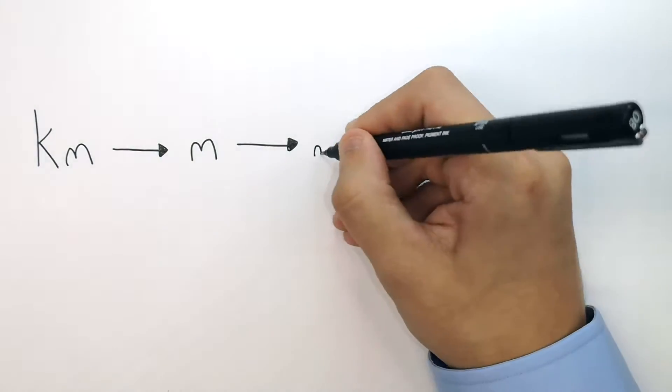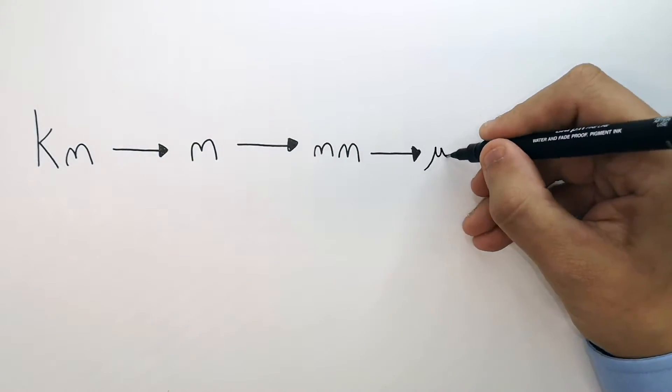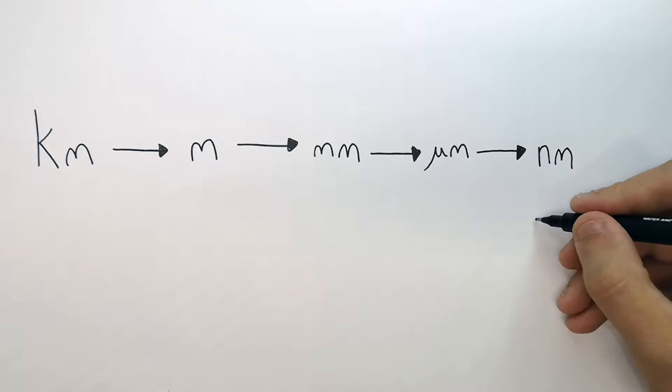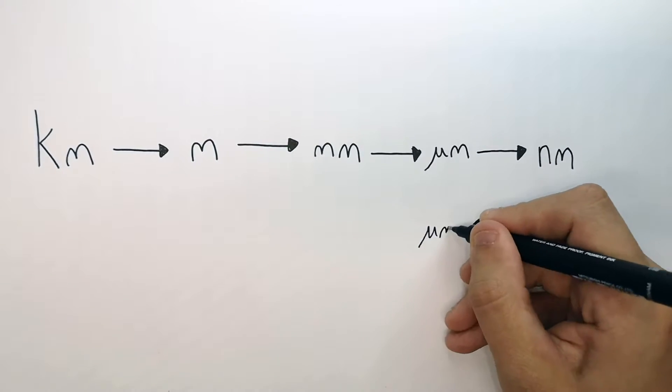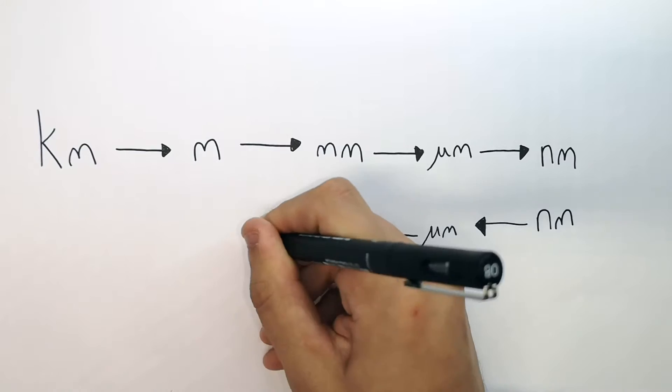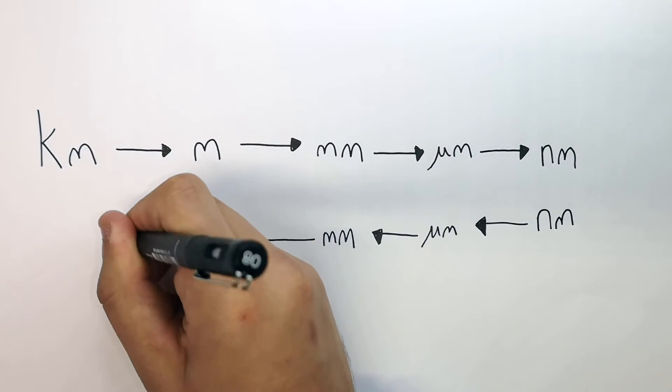Converting kilometres to metres to millimetres to micrometres to nanometres. Then you can convert nanometres to micrometres to millimetres to metres and finally to kilometres.